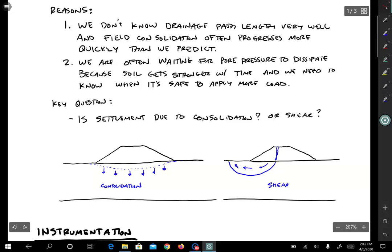If you have sand layers that are horizontally continuous and can convey water, consolidation may go a lot faster because the drainage path length might be half as big as you think it is. So that's the first reason why we might want to do monitoring. Consolidation in the field usually goes more quickly than we predict based on our calculations on some presumed drainage path length and some C sub V value.